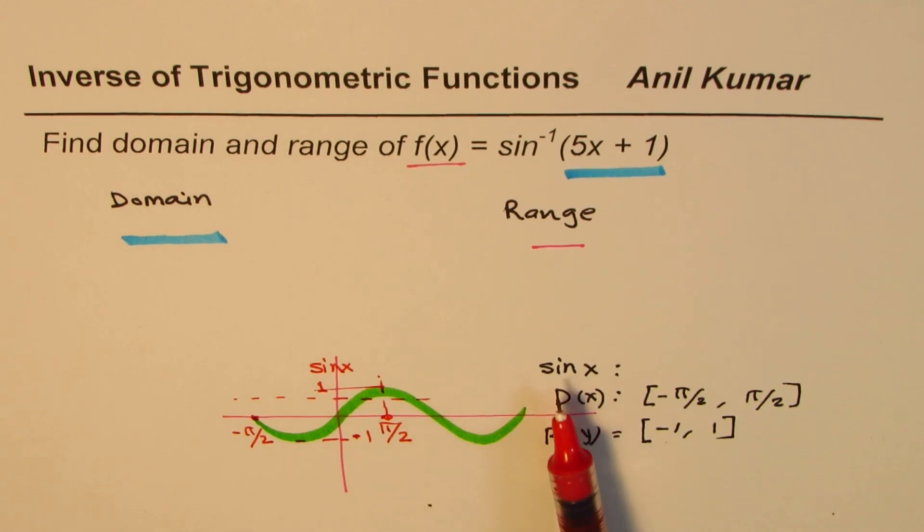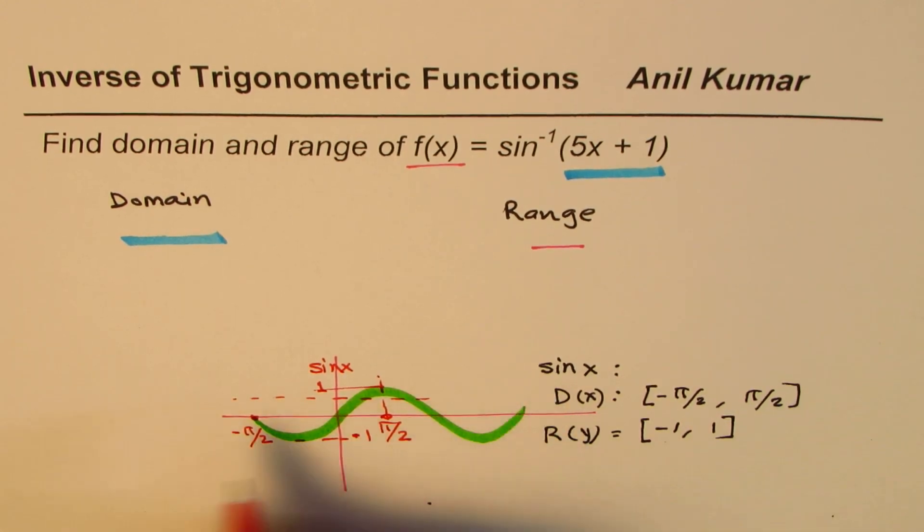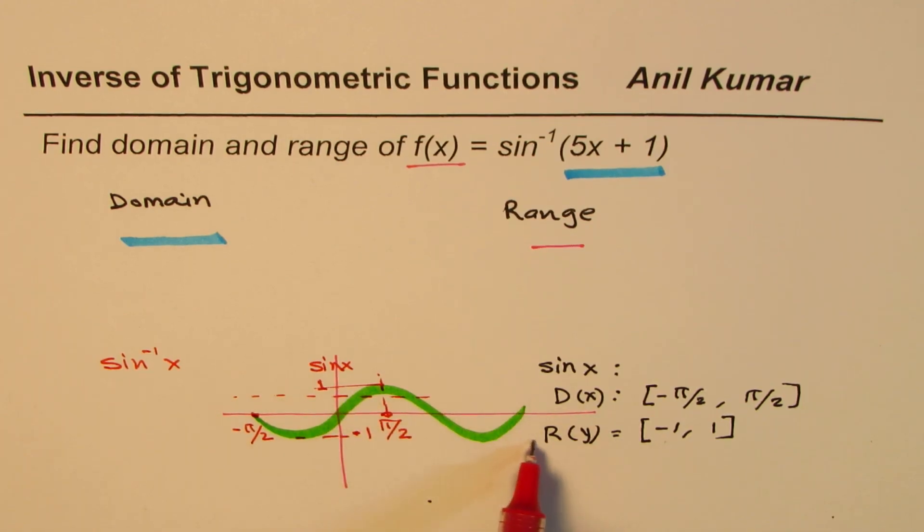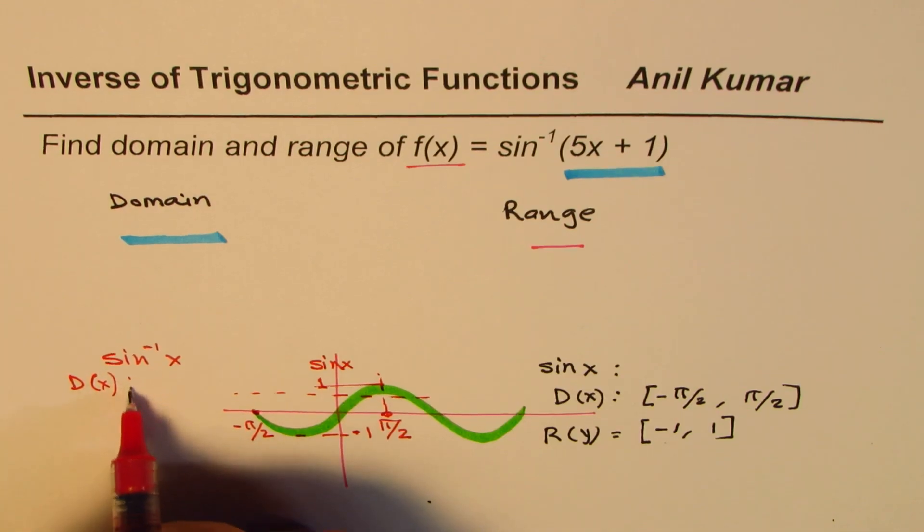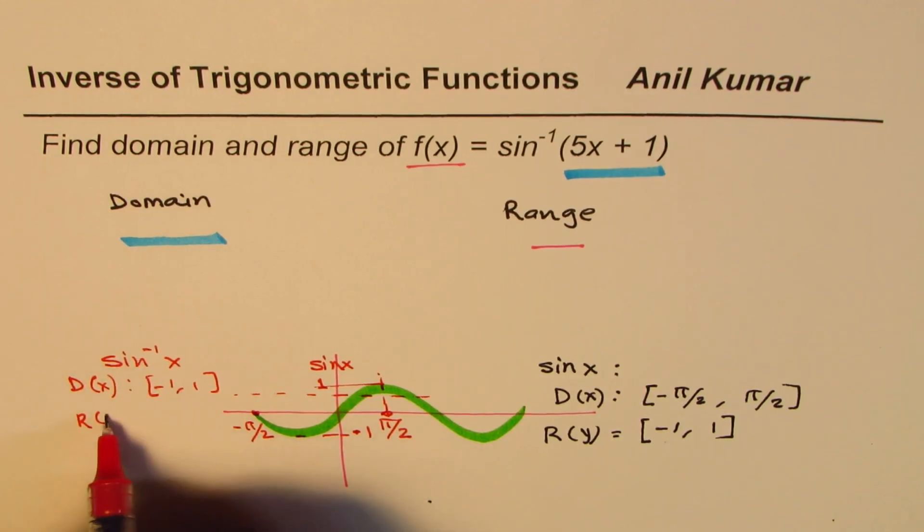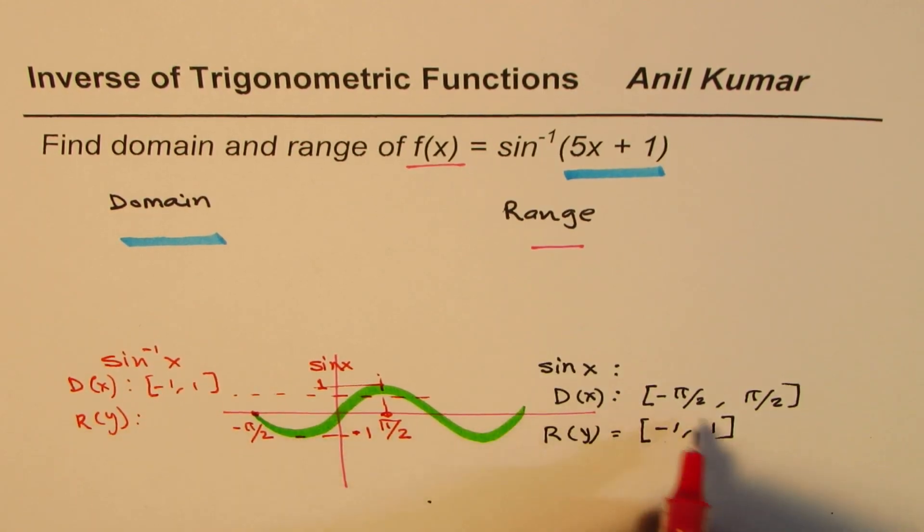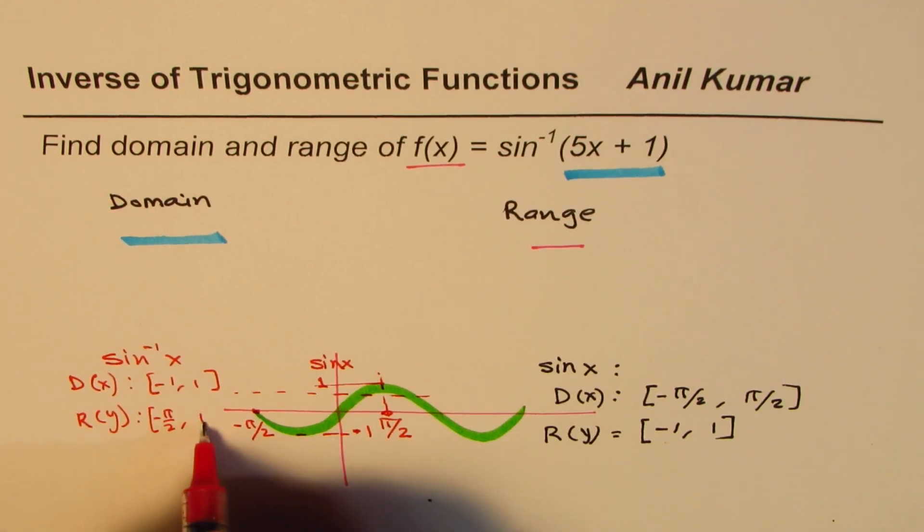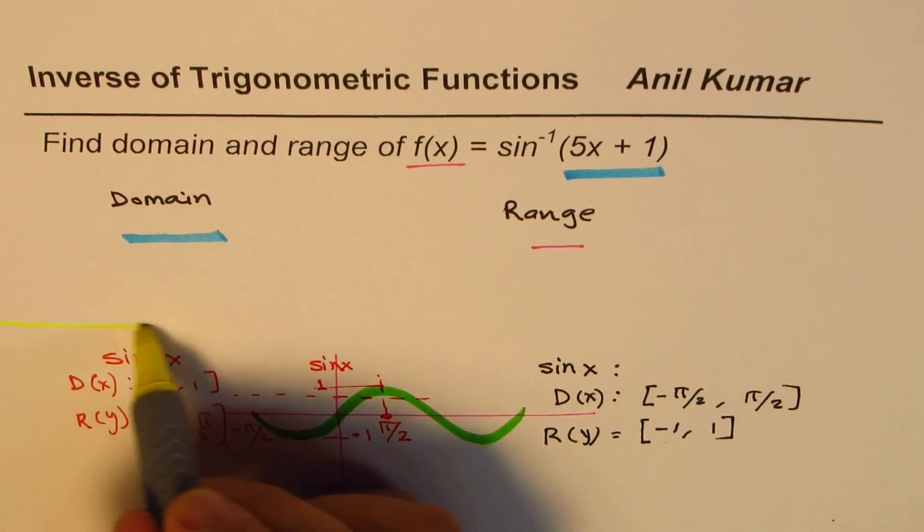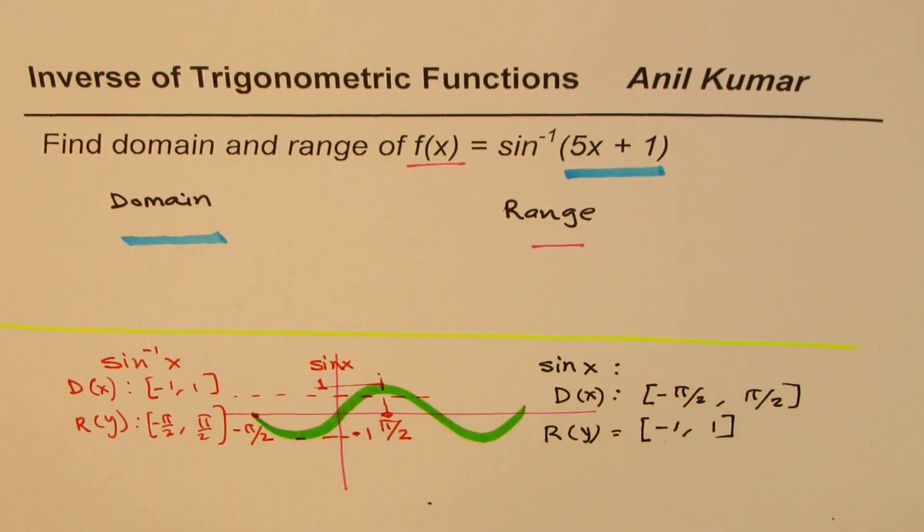Now, if we talk about inverse of this function, we are talking about sine inverse x. So what really happens to inverse is they swap. In a normal case, the domain here will become the range. So the domain of inverse function is going to be from minus 1 to 1, and the range for this inverse function will be from minus pi by 2 to pi by 2. That is just the background, which will help you to answer this question.